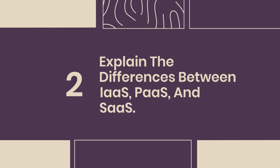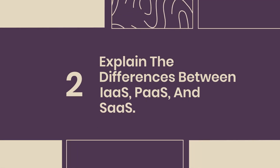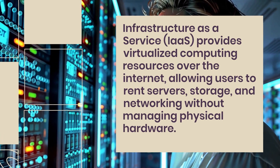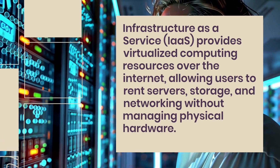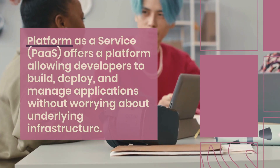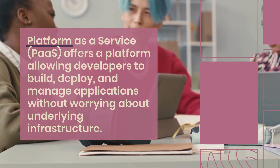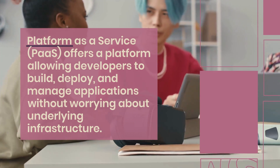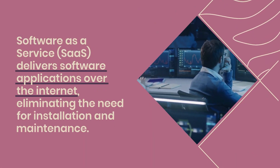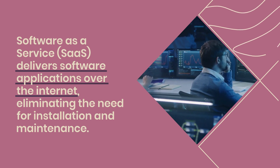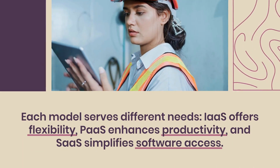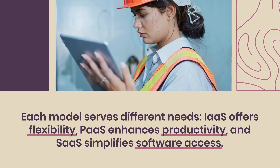2. Explain the differences between IaaS, PaaS, and SaaS. Infrastructure as a Service (IaaS) provides virtualized computing resources over the internet, allowing users to rent servers, storage, and networking without managing physical hardware. Platform as a Service (PaaS) offers a platform allowing developers to build, deploy, and manage applications without worrying about underlying infrastructure. Software as a Service (SaaS) delivers software applications over the internet, eliminating the need for installation and maintenance. Each model serves different needs: IaaS offers flexibility, PaaS enhances productivity, and SaaS simplifies software access.